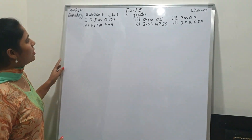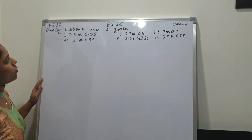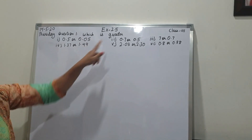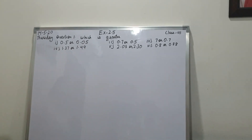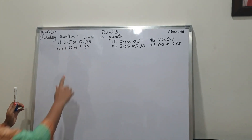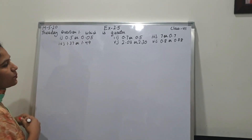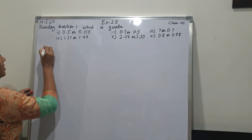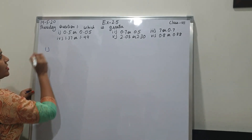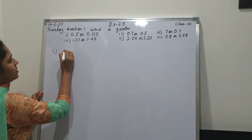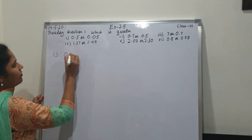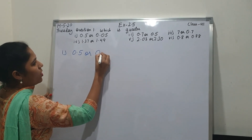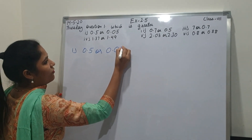Look here. Now, what is the question? Question number 1: which is greater? These are the 6 points. So we will solve. See the first point: 0.5 or 0.05.